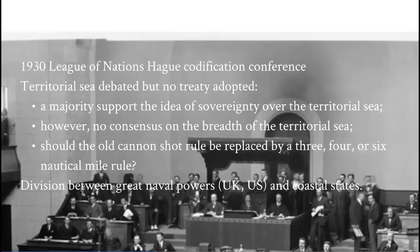Most states supported the idea that states had sovereignty over their territorial sea — that this was a zone of sovereign jurisdiction. However, on the critical question of how wide the territorial sea should be, there was no consensus. There was traditionally a cannon shot rule: the idea that states had a zone of control in their territorial waters out to the distance a cannon could be fired. There was consensus that rule was no longer useful and should be replaced by something expressed in nautical miles, but there was no agreement on whether it should be a three, four, or six nautical mile territorial sea. The division was between the great naval powers — the United Kingdom and the United States, who wanted maximum freedom of movement for their warships — and coastal states, who wanted the maximum zone of control near their coasts.